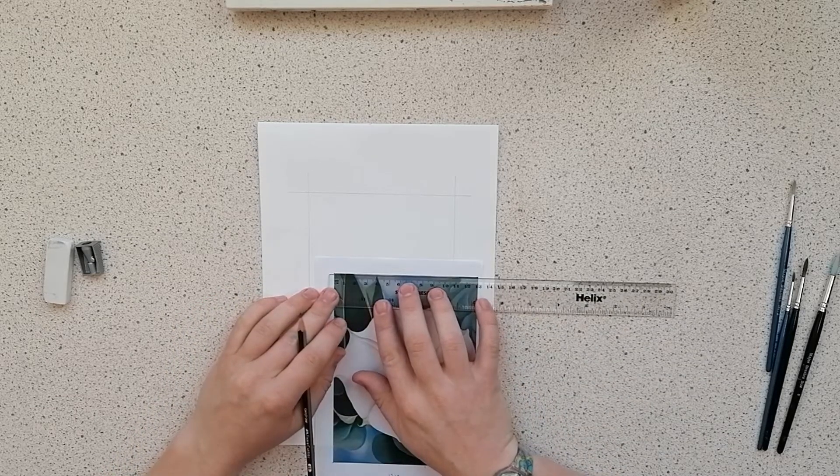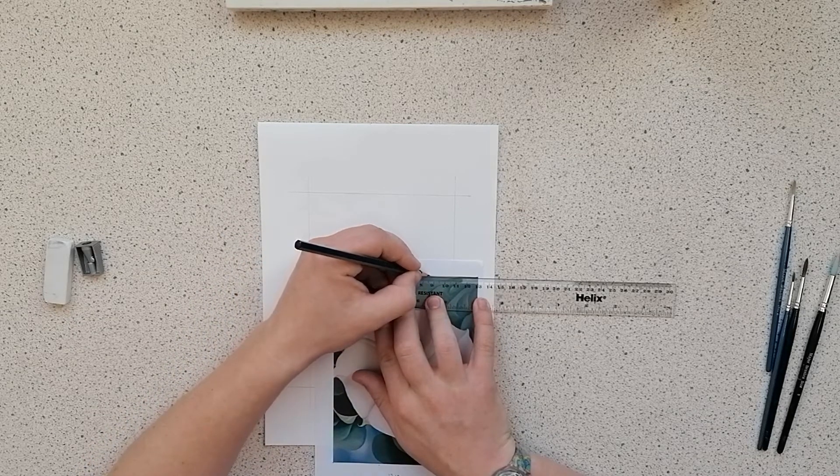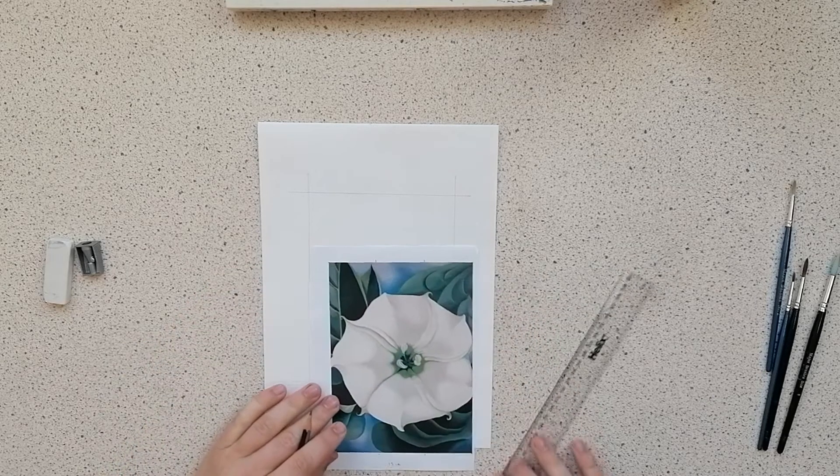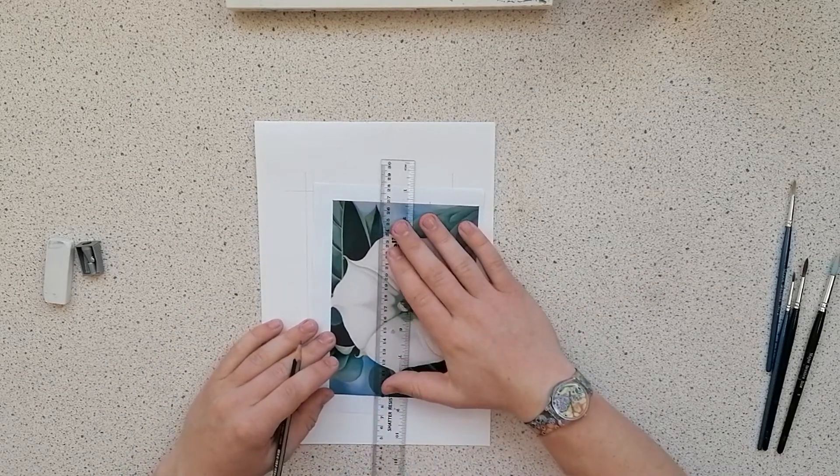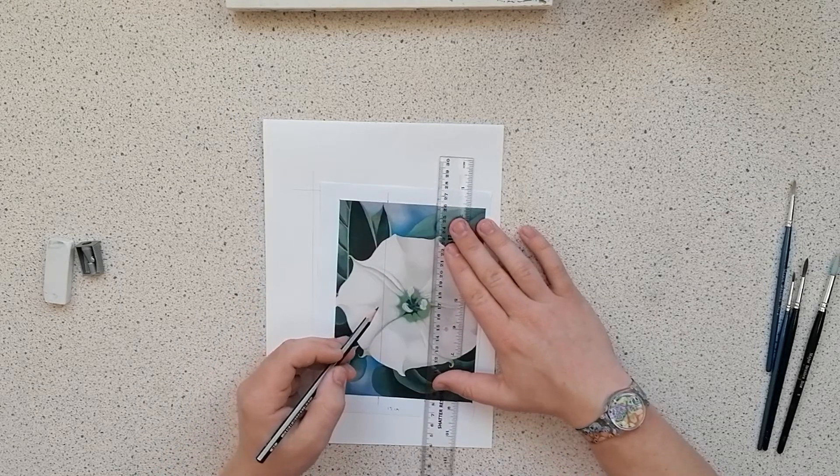And do that for the top and the bottom, and then where you've made your marks you just quite simply draw a line straight across your photograph to join them up.